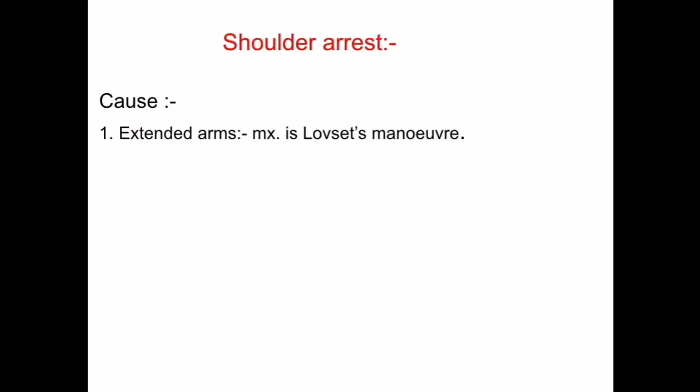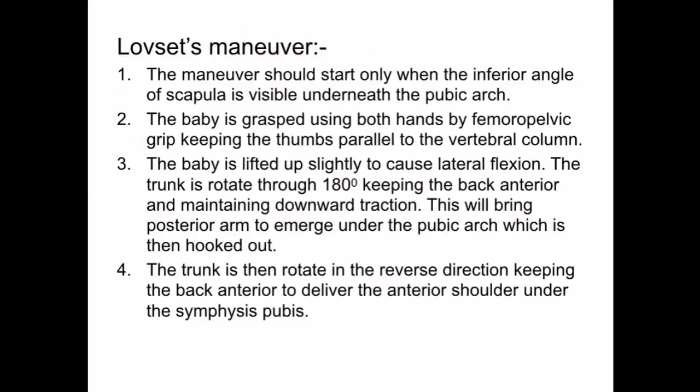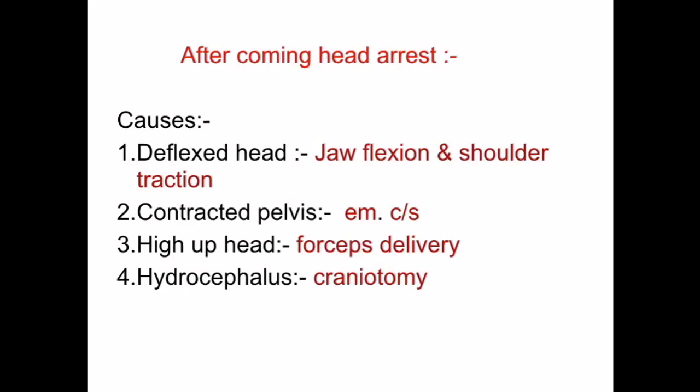For shoulder arrest, the cause is usually extended arms and the management is Løvset's maneuver. This maneuver starts only when the inferior angle of the scapula is visible beneath the pubic arch. The baby is grasped under both hands by femoral or pelvic grip, keeping thumbs parallel to the vertebral column. The baby is lifted slightly to cause lateral flexion, then the trunk is rotated 180 degrees keeping the back anterior and maintaining downward traction. This brings the posterior arm to emerge under the pubic arch, which is then hooked out. The trunk is then rotated in reverse, keeping the back anterior, to deliver the anterior shoulder under the symphysis pubis.